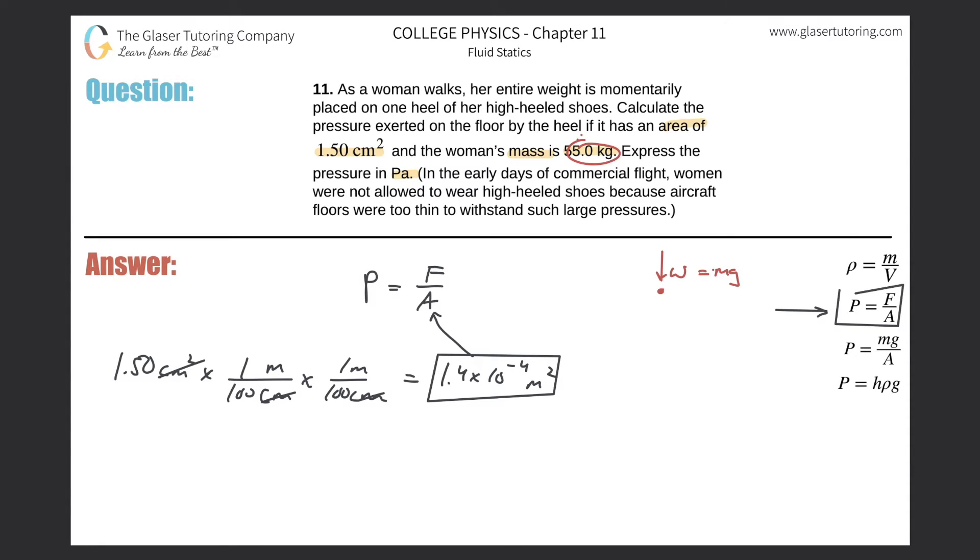They gave us her mass so that's very simple. The pressure here is going to be equal to the mass multiplied by gravity all divided by area. Let's just plug everything in. So this is 55 multiplied by 9.8 all divided by the 1.4 times—